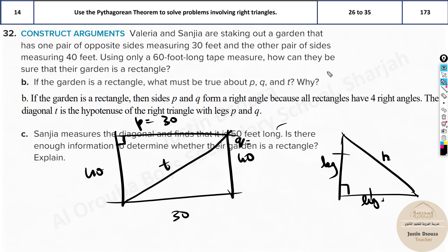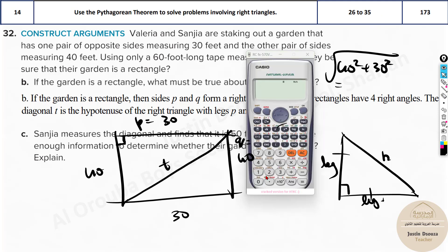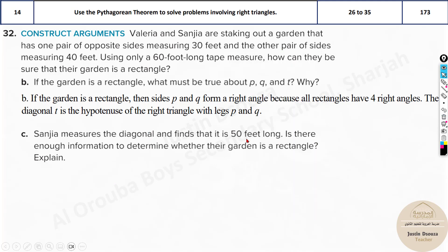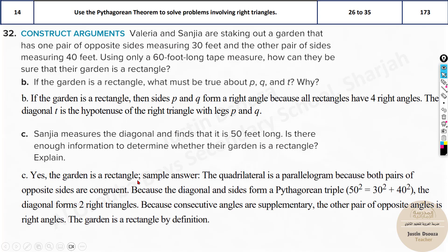We use the Pythagorean theorem: the square root of 40 squared plus 30 squared. Using the calculator: square root of 40 squared plus 30 squared equals 50. Yes, the diagonal is also 50. That means yes, it should be a right-angled triangle, and only if it's a rectangle is that possible. So this is a rectangle. These are just understanding problems — take your time, understand the concept, and then solve.